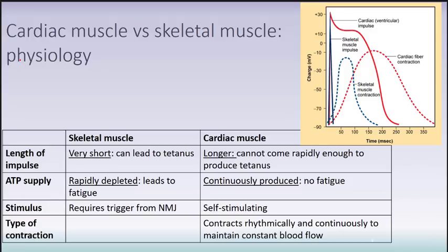Looking at cardiac muscle versus skeletal muscle in more detail — in terms of impulse length, skeletal muscle has a very short impulse, shown in blue on the graph, which happens quickly then drops. This feature can lead to tetanus, the prolonged contraction caused by rapidly repeated stimuli. Cardiac muscle has a much longer impulse length and so cannot produce the tetanus that skeletal muscle can.